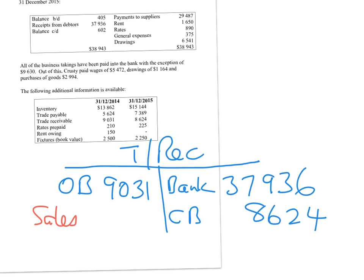Now we can find the missing sales. By adding the two figures on the credit side and subtracting the debit figure of 9,031, we arrive at a credit sales figure of 37,529.